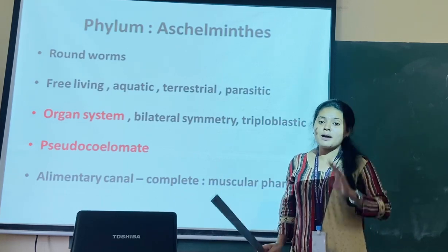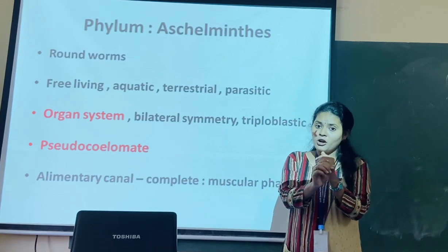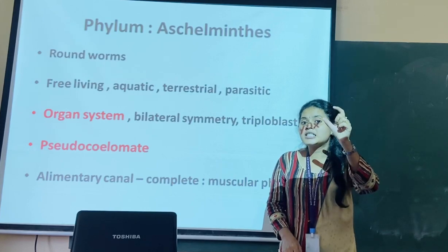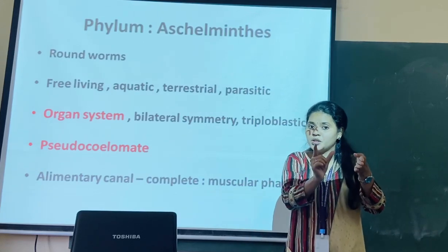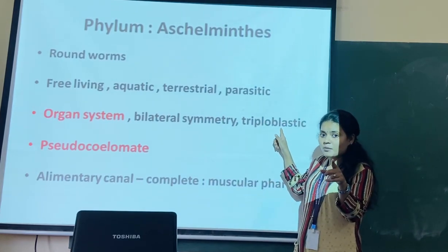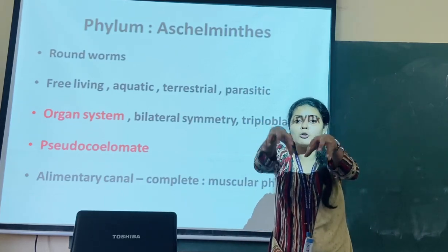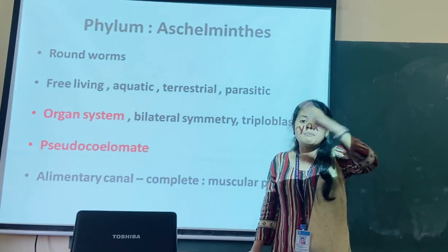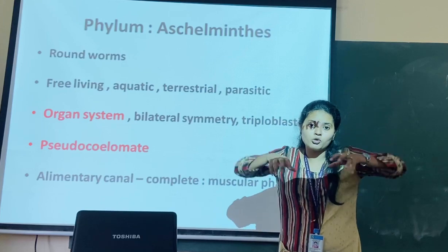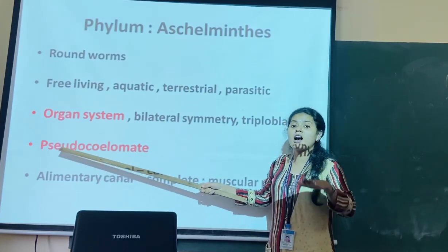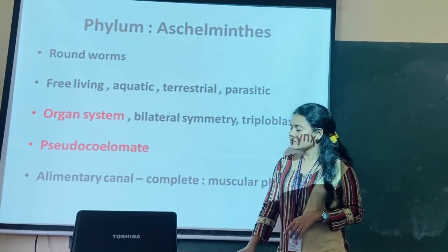A very important feature to remember is that these organisms are pseudocoelomate. The body has ectoderm, endoderm, and mesoderm. A coelom is present between the body wall and the alimentary canal, and that coelom should be lined by mesoderm. However, the coelom here is not continuous - it is in the form of pouches. Since it is not continuously lined by mesoderm, these organisms are called pseudocoelomates. This is the only phylum you need to remember as pseudocoelomate.